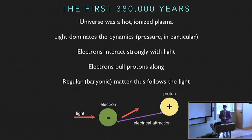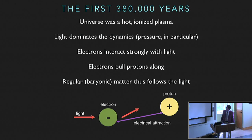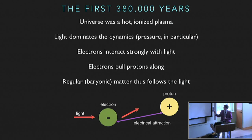First, you need to know that the universe was a hot ionized plasma — ionized means the atoms were separated into electrons and protons. Second, light dominates the dynamics. The light that's present in the universe is what pushes around the regular matter. Light dominates the pressure: photons come in, electrons interact strongly with light through Thompson scattering, the electrons move, and then the electrons pull the protons along by electrical attraction. In this manner, the regular or baryonic matter actually follows the light — the light tells it what to do.